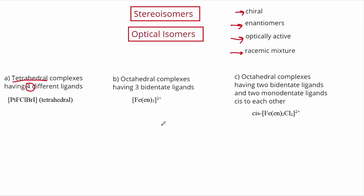Optical isomers also appear in octahedral complexes having three bidentate ligands. With three ethylenediamines, for example, there's a right-handed and a left-handed version — mirror images that are not identical. It's difficult to see without a three-dimensional model, so it's easiest to memorize: three bidentate ligands in an octahedral complex will have two enantiomers — it is a chiral compound. The last case is an octahedral complex with two bidentate ligands and two monodentate ligands in the cis configuration (90 degrees apart, not 180). With two ethylenediamine ligands and two chlorines in the cis arrangement, there will also be a right-handed and left-handed version. Octahedral, two bidentates, two monodentates in the cis conformation — that's capable of optical isomers.